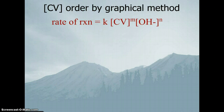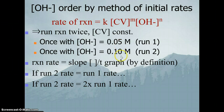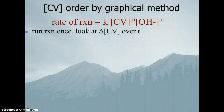That's the method of initial rates. To determine the order of reaction for crystal violet, we're going to use the graphical method. While the method of initial rates involved two short runs of about 30 seconds each, the graphical method involves one long run — about 6 minutes — where we monitor the change in concentration of crystal violet over time.